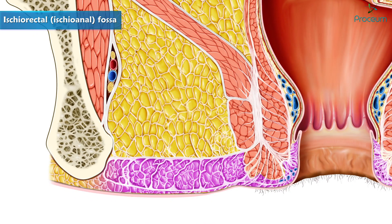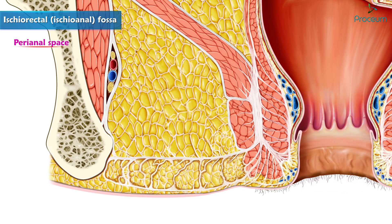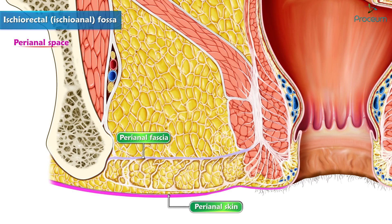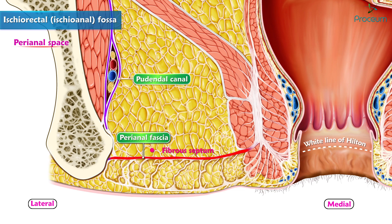Now let's take a look at the anatomy of the perianal space. The perianal space is situated at the termination of the anal canal, that is on each side of the anal orifice. It is bounded above by the perianal fascia and below by the perianal skin. The perianal fascia is a fibrous septum which extends from the white line of Hilton medially to the pudendal canal laterally.